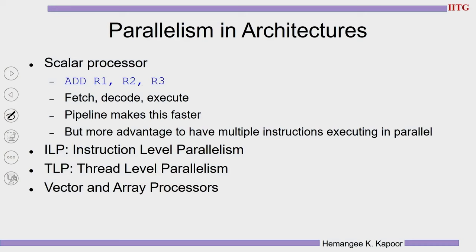Now where is the parallelism to be exploited? We had scalar processors in the initial years — a scalar processor executes one instruction at a time. For example, the instruction 'add R1, R2, R3' means R1 = R2 + R3: first fetch the instruction, decode it, execute, then store the result. This would take some number of cycles. But I can make this faster using a pipeline, because a pipeline helps you do multiple tasks in tandem.